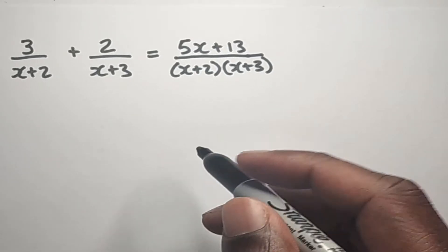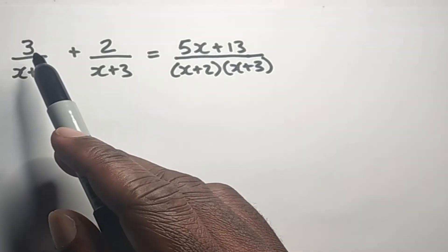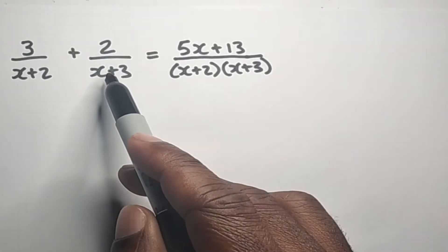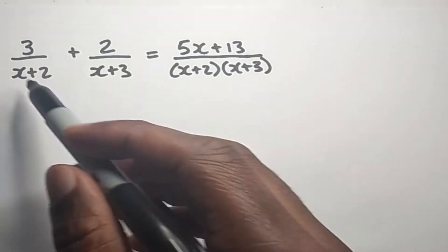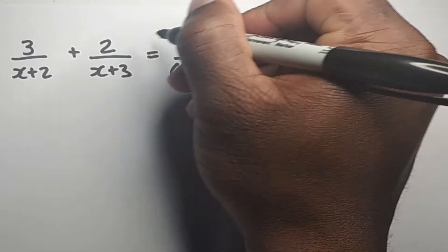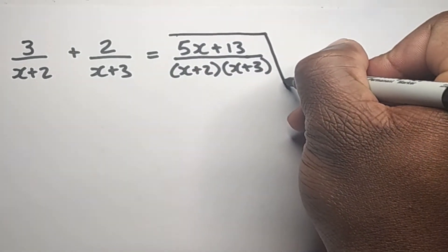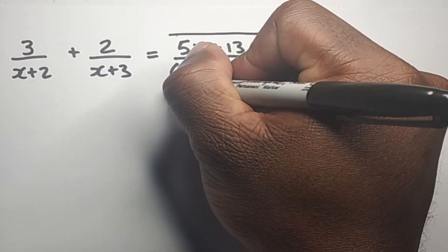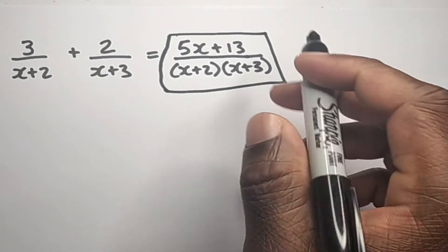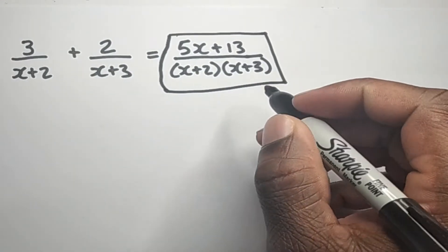Now we want to look at partial fractions. Let's say we had 3 over x plus 2, plus 2 over x plus 3. If we should simplify these algebraic fractions, this is what we would get. So we refer to this as a simplified fraction.